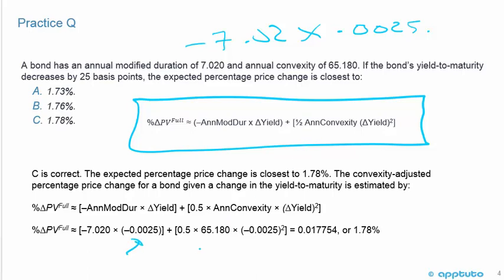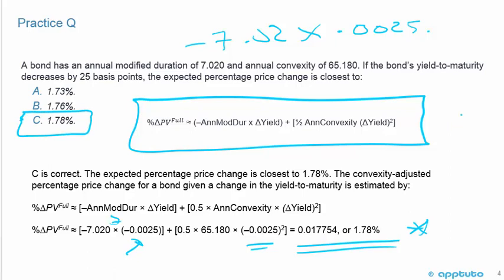The expected percentage price change equals negative 7.02 times negative 0.0025, plus 0.5 times 65.18 times negative 0.0025 squared. Don't forget the negative sign because the yield decreases — getting the sign right on the first part is important. The result is 0.017754, or closest to 1.78%, so C is correct. These questions are not too difficult; you just have to have this formula memorized absolutely 100%.